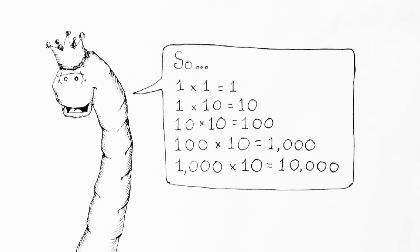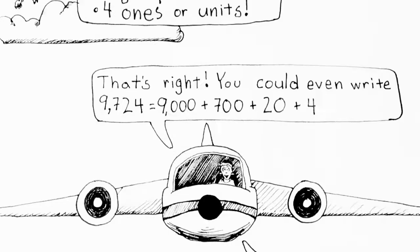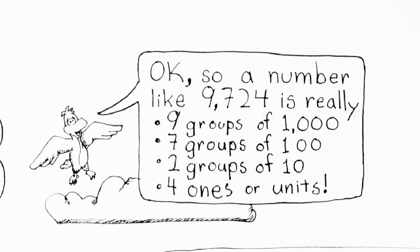So what does that mean if we have a number that's not just all ones? Let's look at the number 9,724. In that number, we have a nine in the thousands place — that means there are nine groups of a thousand. We have a seven in the hundreds place — that means we have seven groups of a hundred. We have a two in the tens place — that means we have two groups of ten. And we have a four in the ones place — that means we have just four ones, or units. So that number is actually telling us we have different groups of numbers.